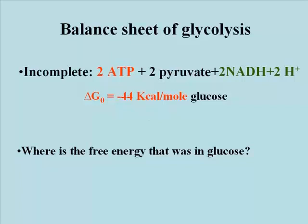Here's a balance sheet for glycolysis of a mole of glucose to 2 moles of pyruvate. We have consumed 2 molecules of ATP, but we synthesized 4. That's a net of 2 ATPs produced. The 2 ATPs account for a capture of approximately 15 kilocalories of the free energy once in glucose.